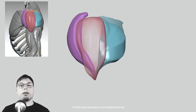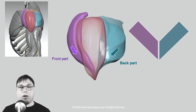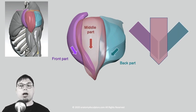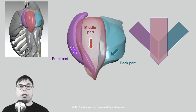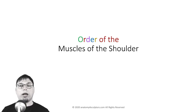The three parts of the deltoid are not simply side by side. The front part and the back part of the deltoid are actually located underneath the middle part, and you can see this whether you look from the front or from the back.